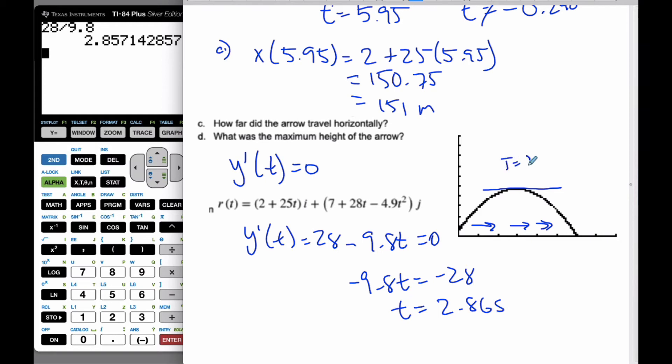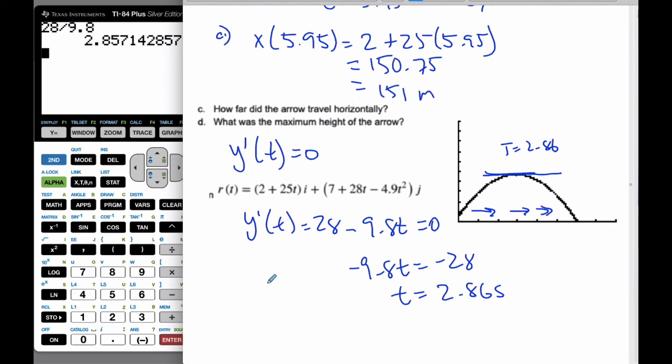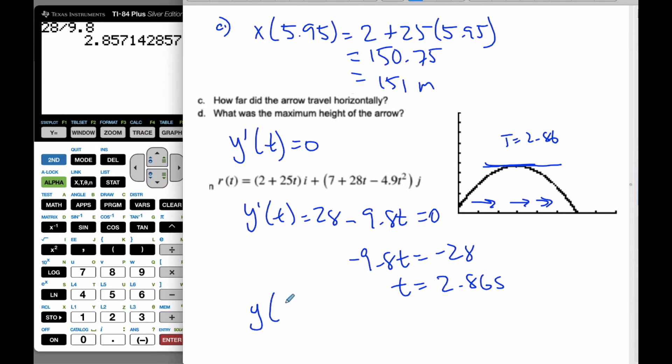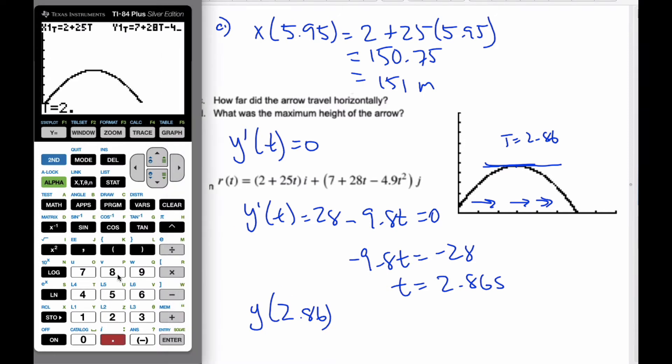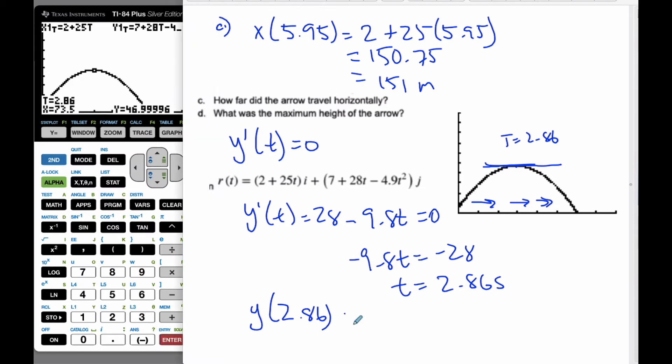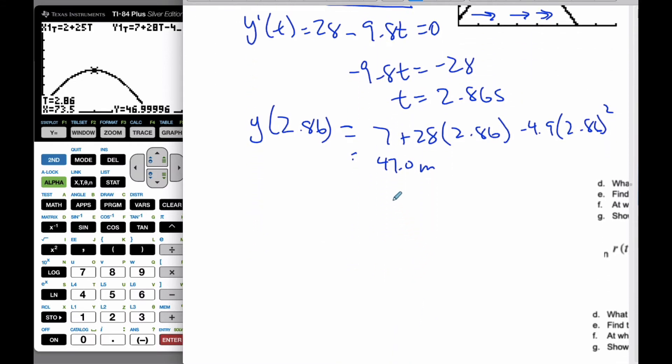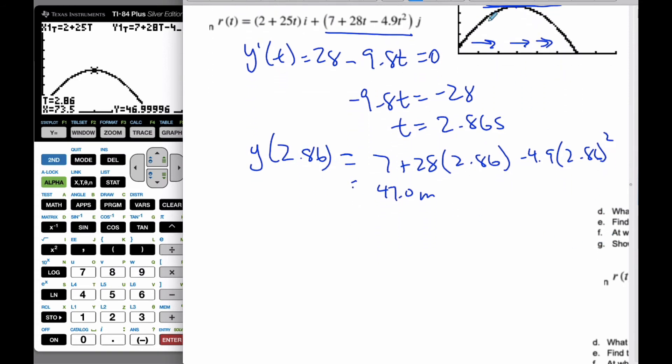When t = 2.86 seconds, the velocity is 0, but I'm not looking for when the velocity is 0. I'm looking for the maximum height. So then I go into my regular function at 2.86, the y value. I'm doing 7 + 28(2.86) - 4.9(2.86)². When I do that, I get 47.0 meters, and that was part d, finding the maximum height of the arrow.